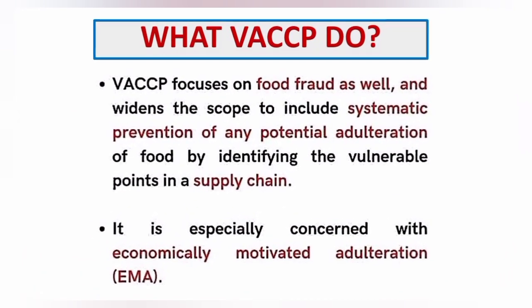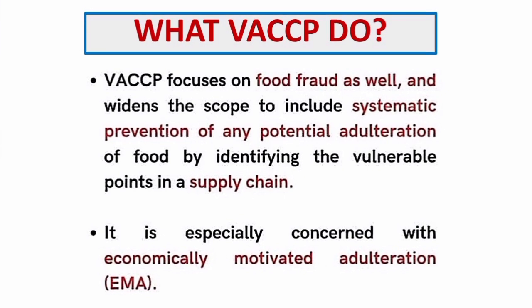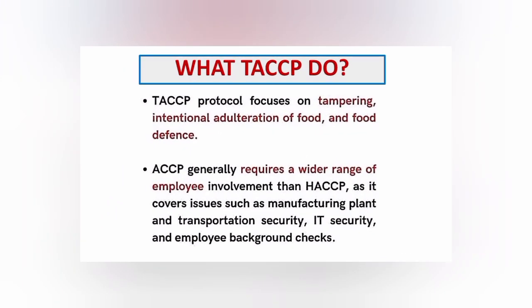the vulnerable points in the supply chain. It is especially concerned with economically motivated adulteration. And the third pillar is what is TESCP?